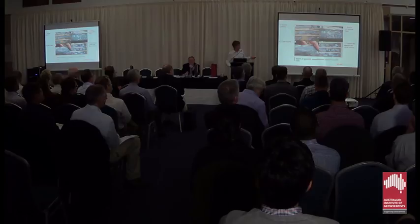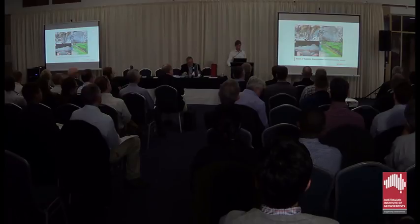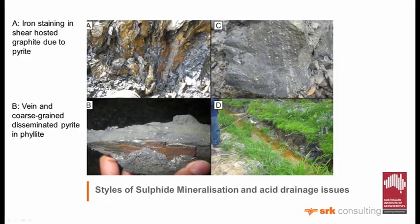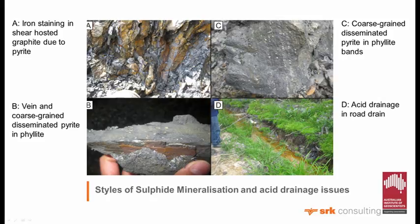There's also disseminated graphite extensively veined with calcite. There's a lot of sulphur in the system, which was observed during our first site visit - this iron staining is due to pyrite. We also have some coarse-grained disseminated graphite in these phyllites; again, you've got pyrite and chalcopyrite mostly, with some coarse-grained disseminated pyrite in the phyllitic bands. It's causing a lot of issues with acid drainage, which the client wasn't aware of until we pointed it out. The limestone to the west may help when it comes to developing this as a mine.